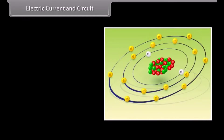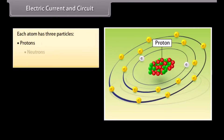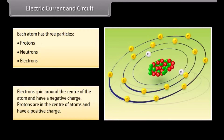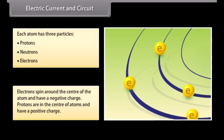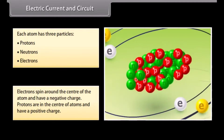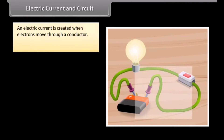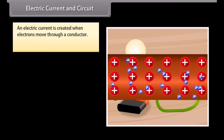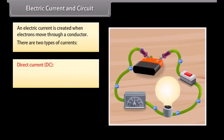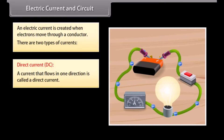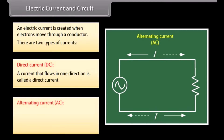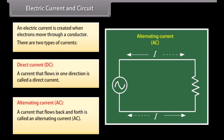All things around us are made up of atoms. Each atom has three particles: protons, neutrons, and electrons. Electrons spin around the center of the atom and have a negative charge. Protons are in the center of atoms and have a positive charge. An electric current is created when electrons move through a conductor. There are two types of currents: direct current (DC), a current that flows in one direction — for example, a battery produces a direct current — and alternating current (AC), a current that flows back and forth. The symbol of electric current is I.